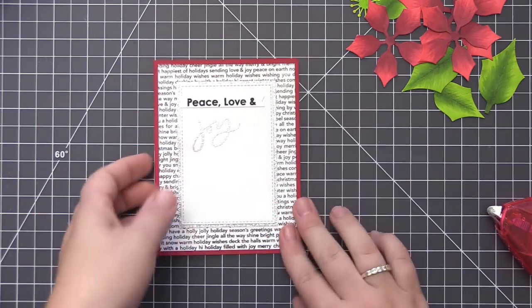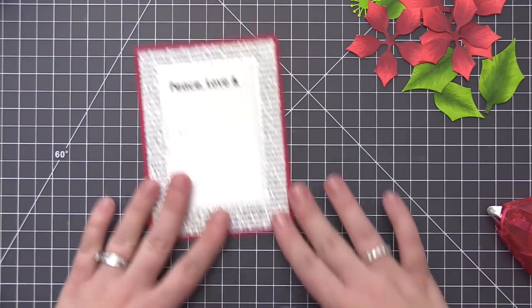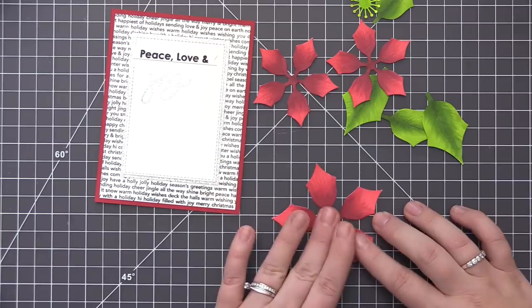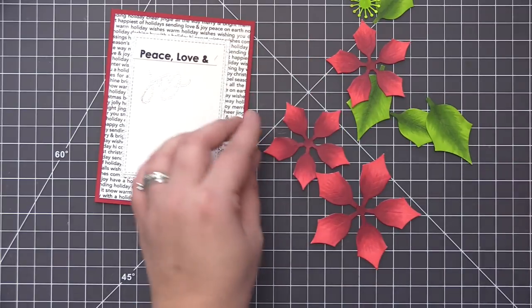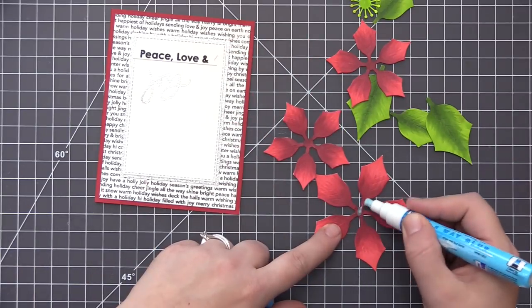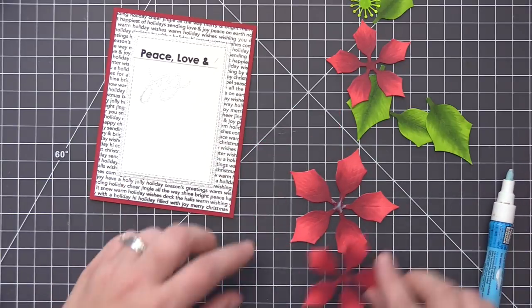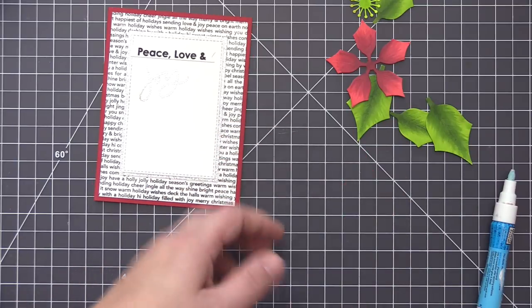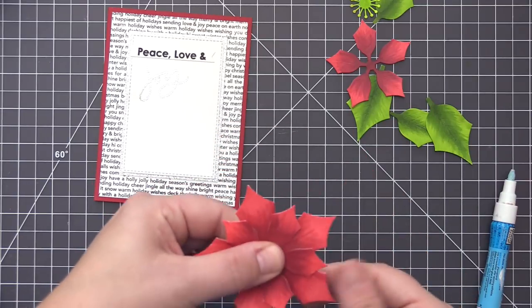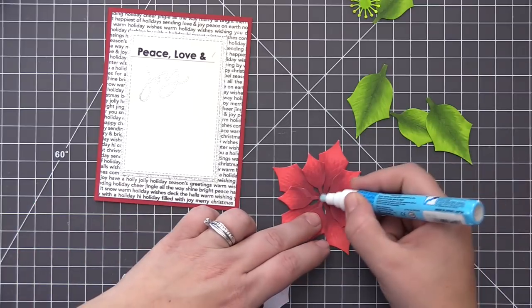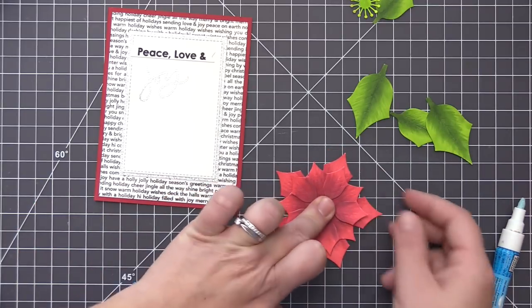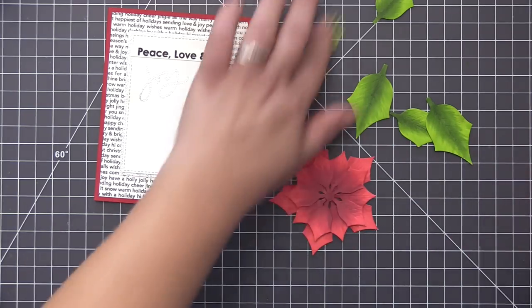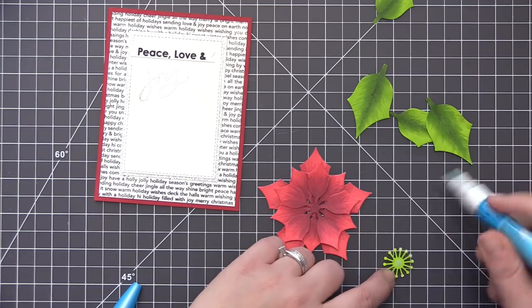So now that we have the background and the sentiment done we can start to assemble our poinsettia. Now I kind of had an idea in mind before I started this card of where I wanted to position this so that's why I kind of made sure to have that sentiment up on the top left side. I want to have the poinsettia be towards the bottom right and I really want this to be the focus of the card. So I'm going to first assemble the different petals of the flower. To do this I like to just use some liquid glue and add it to the center. I don't add any adhesive underneath any of the petals because I like to be able to kind of lift them up to give them a little bit of extra dimension so by only adhering it in the center that leaves the petals completely loose so that you can kind of bend them upwards.